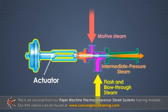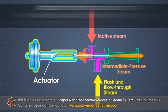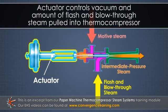The actuator moves the spindle toward or away from the nozzle opening to control the flow of motive steam through the thermocompressor nozzle. Therefore, it controls the creation of the vacuum and the amount of flash and blow-through steam that is pulled into the thermocompressor.